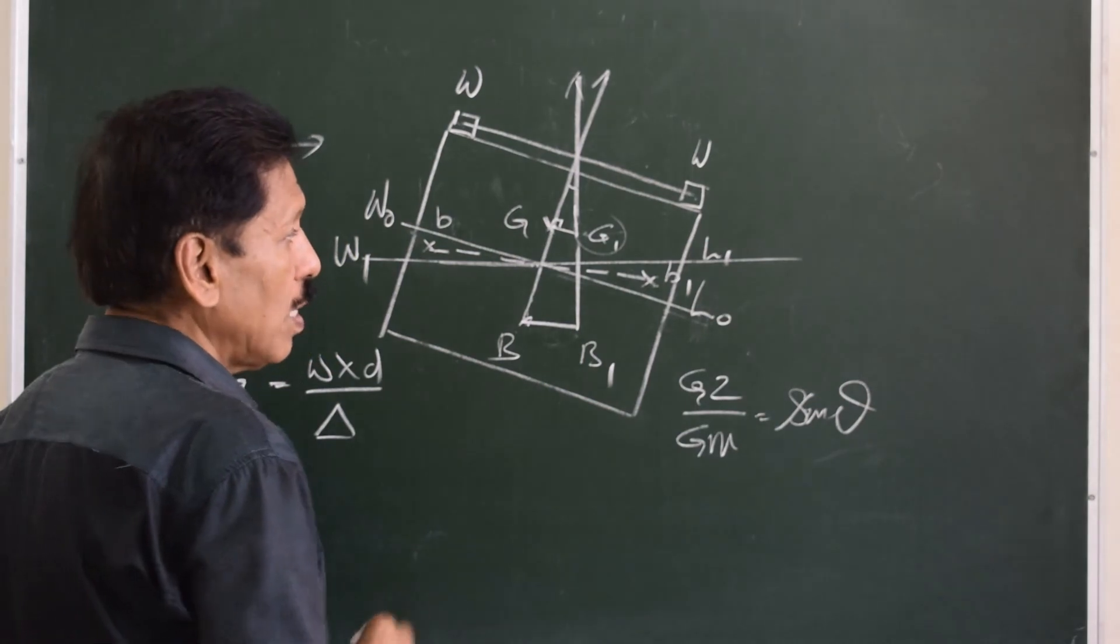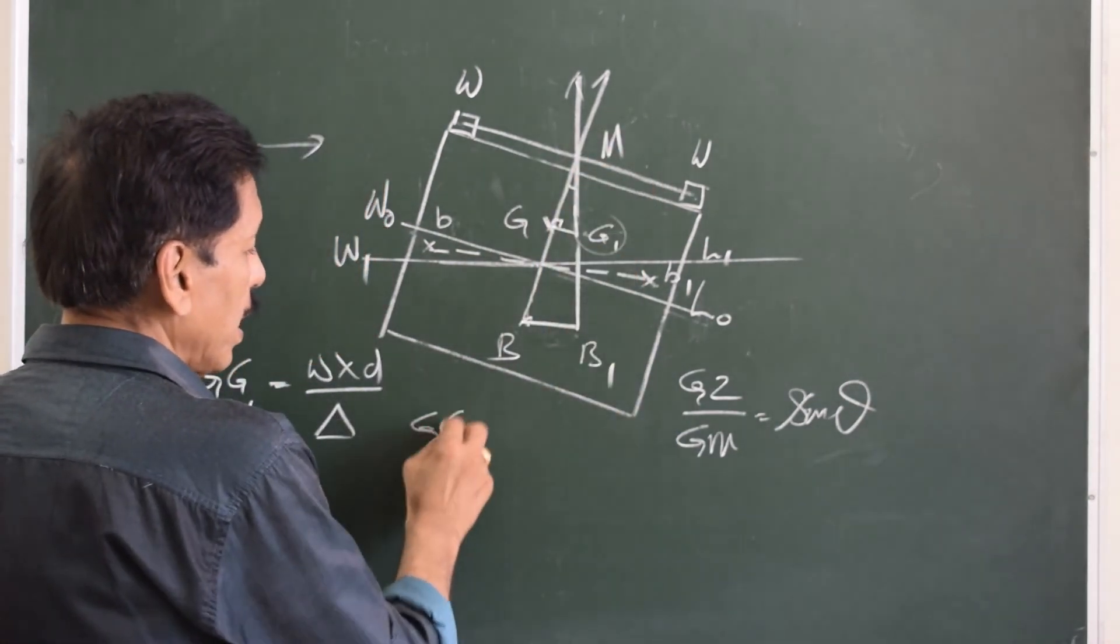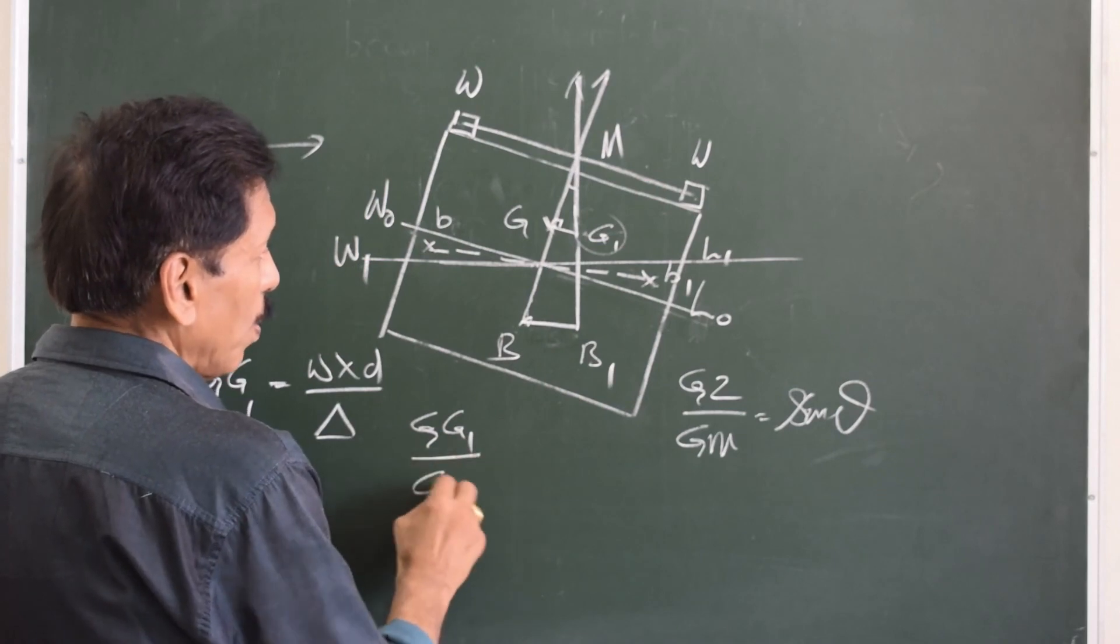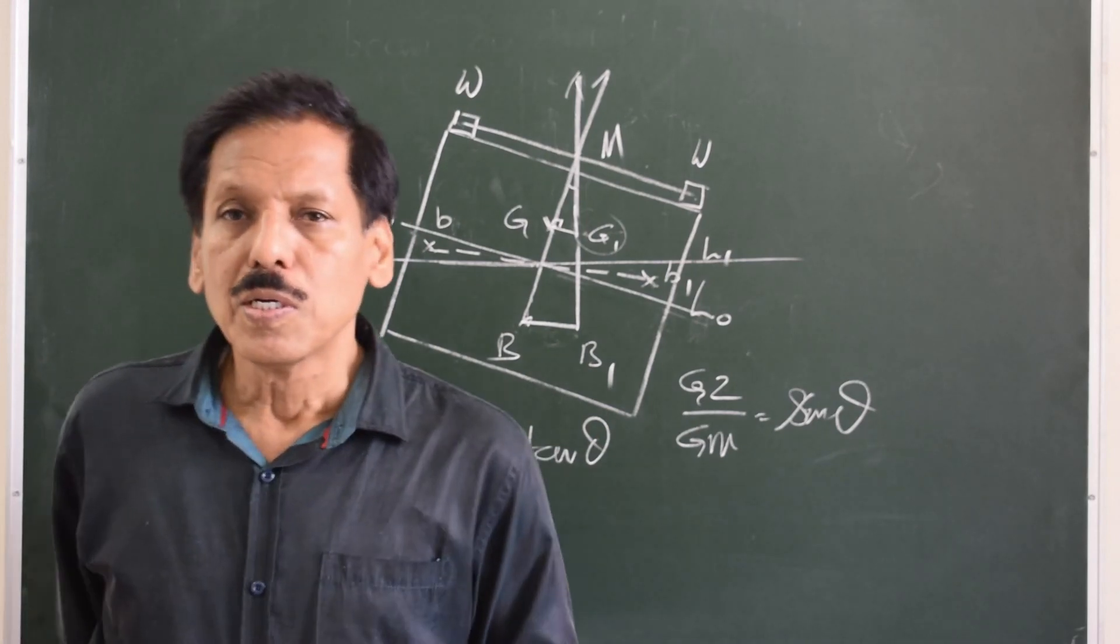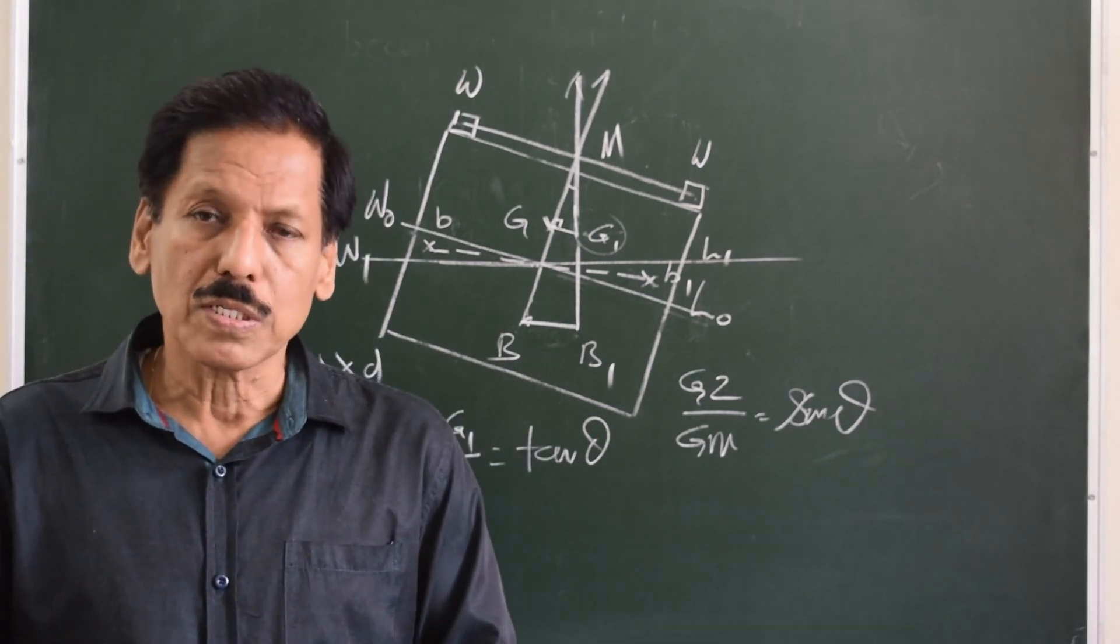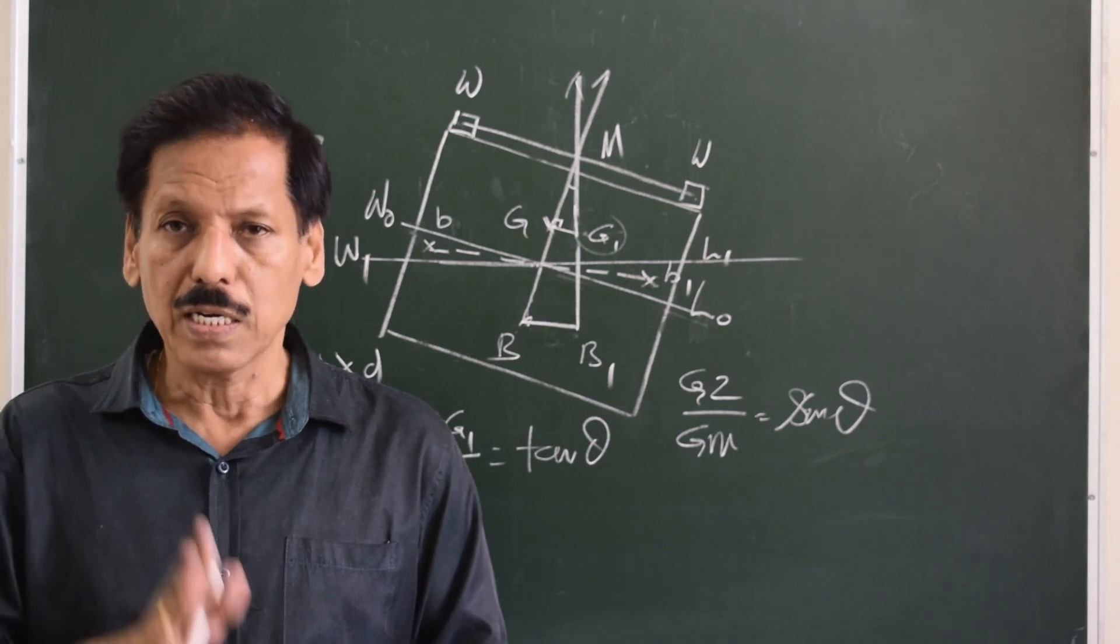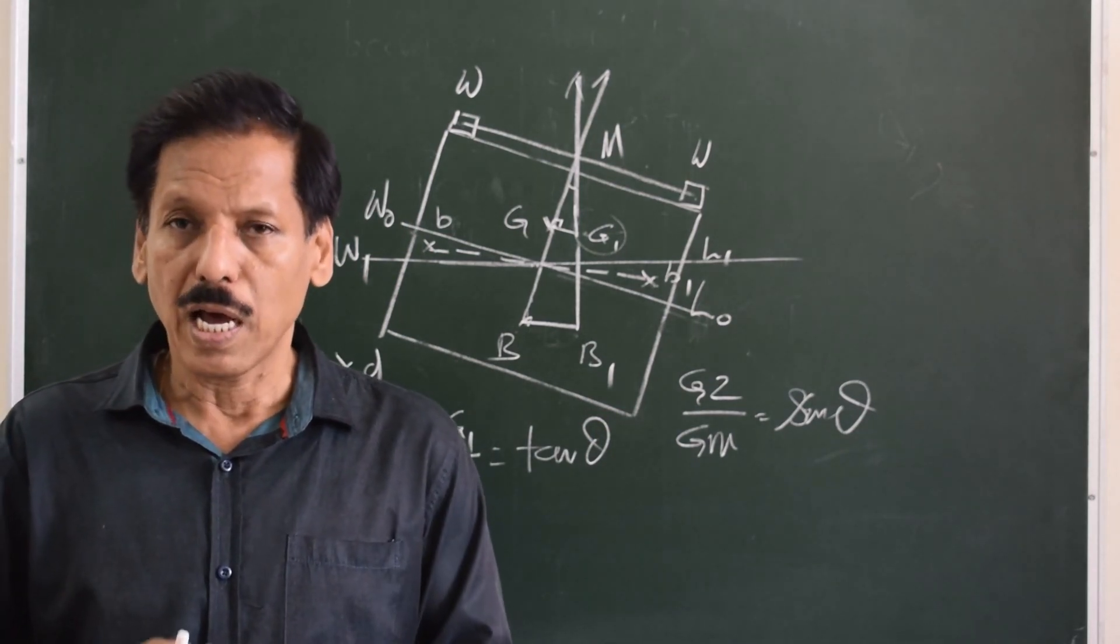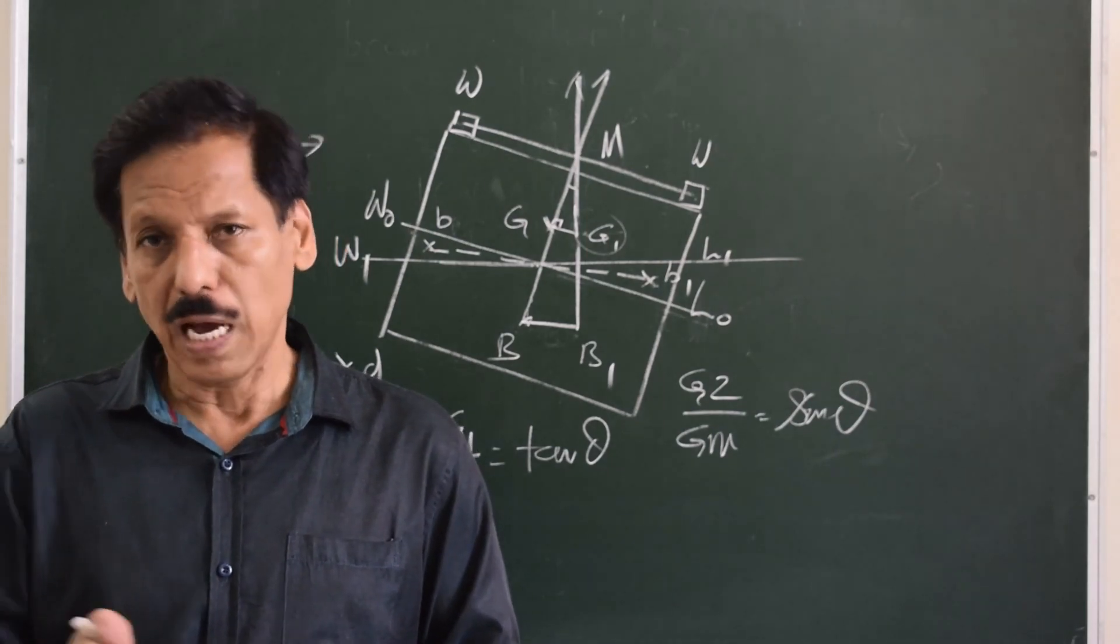If it is small list, we can call this point as metacenter, so that the formula is GZ1 upon GM is equal to tan theta. So students, this was heel diagram and list diagram. I hope you understand the difference in drawing and I hope you understand the difference in the two concepts, list and heel.